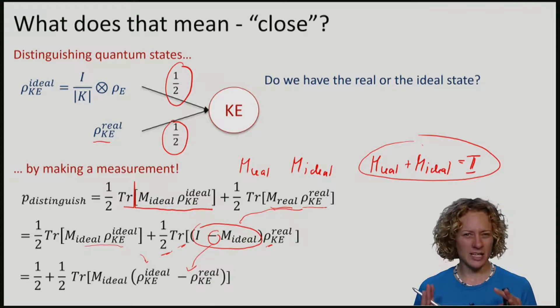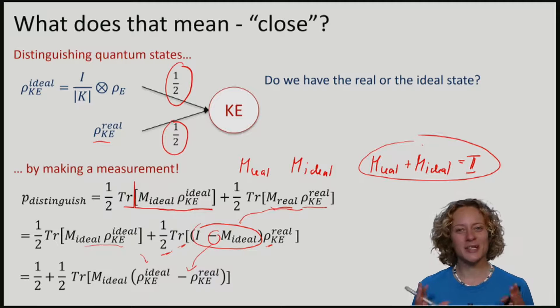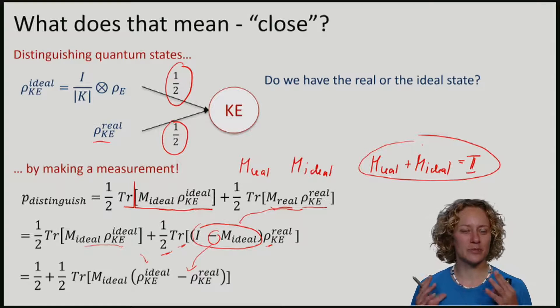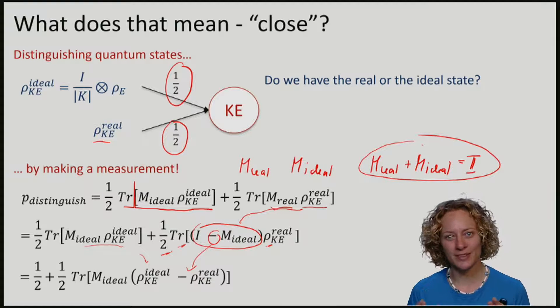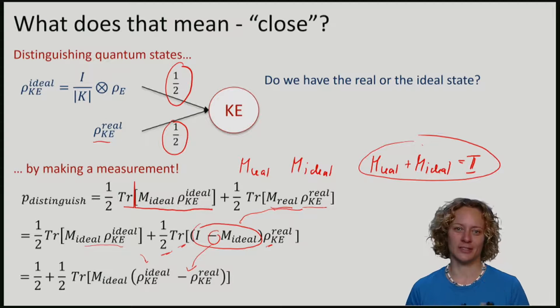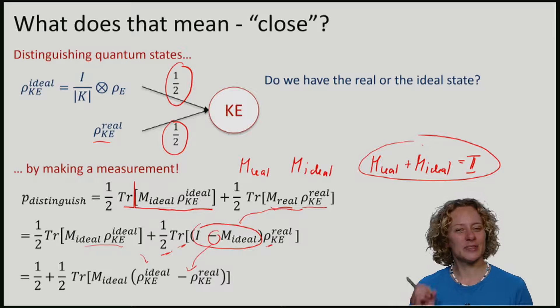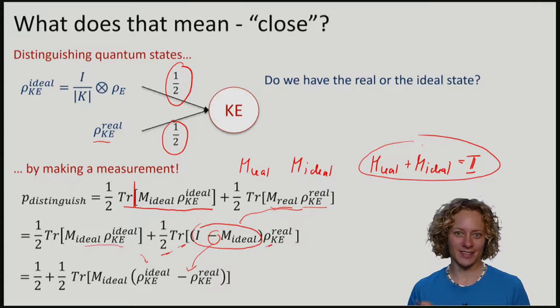So, we're talking about distinguishing states. And the idea now behind a nice measure of closeness is that we will call two states close if they're difficult to distinguish. So, let's define a distance measure that is precisely aimed at capturing this idea.